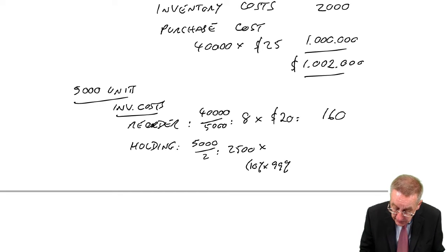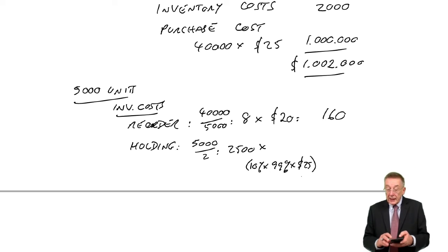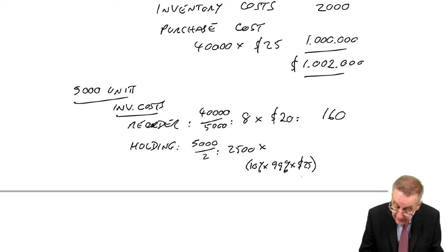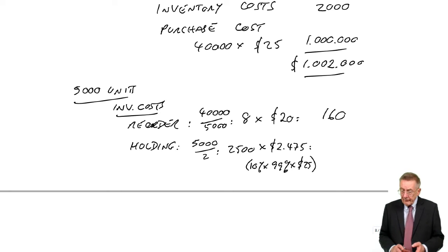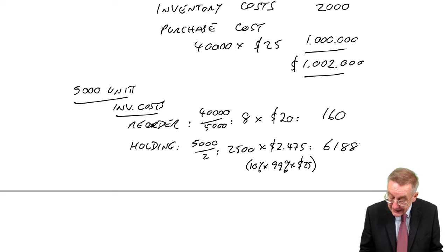So the purchase price will be slightly lower. It will only be 99% of $25. And so the holding cost per unit, 99% of 25 is $24.75. 10% of that, it's slightly lowered to $2.475. So it's a tiny thing, but even so. And so over the year, multiply that by 2,500, the average inventory, it's $6,188.